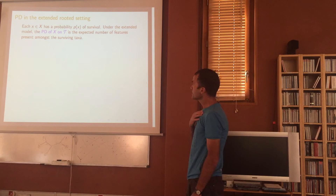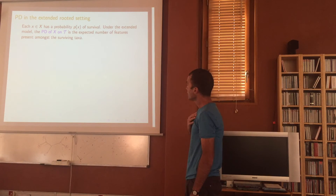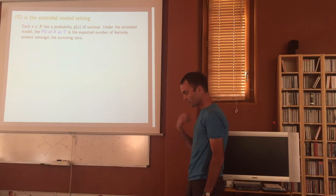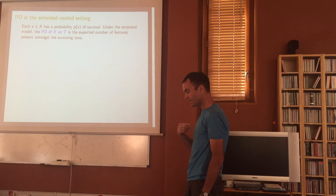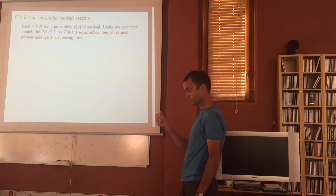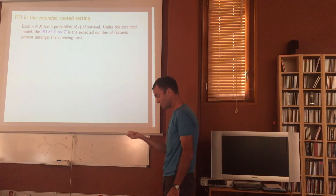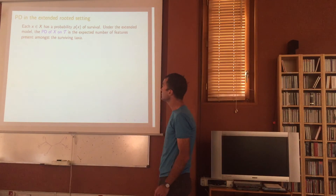Each element has a probability p(x) of survival. Because we're dealing with probabilities, we now care about the expected PD. It's the expected number of features, or expected PD, that we're interested in.